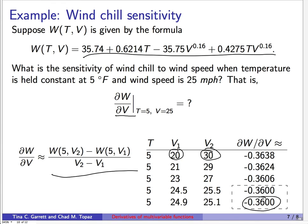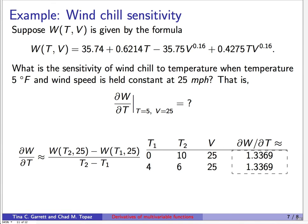For the other partial derivative ∂W/∂T, we now let T vary and hold V constant at 25, using tighter intervals in T. Starting with T from 0 to 10 gives 1.3369. A tighter interval from 4 to 6 also gives 1.3369 to four decimal places. So we're confident that ∂W/∂T ≈ 1.3369.